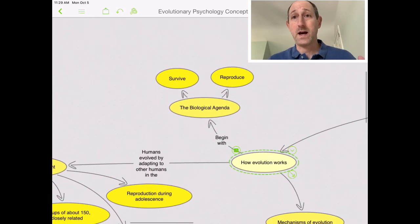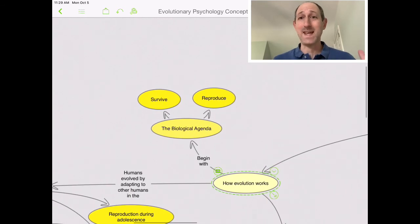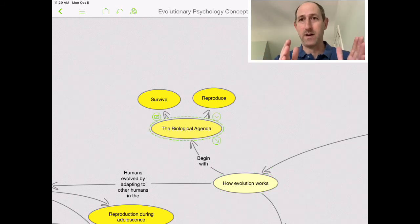We begin with the biological agenda. The biological agenda is very simple. It is what all DNA wants to do. It wants to survive and reproduce. It's not that complicated. You can't reproduce if you don't survive, so that usually comes first.